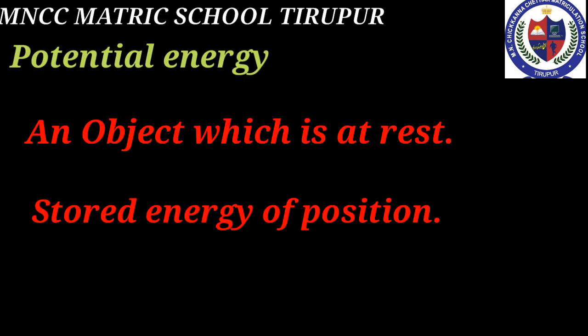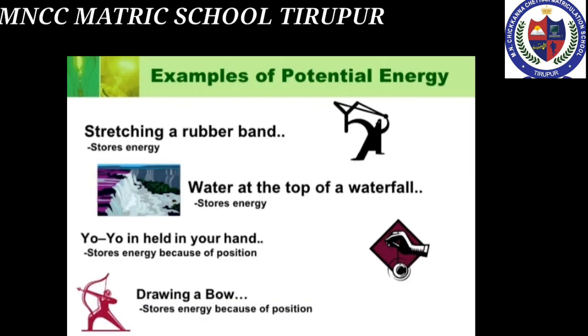The next one is potential energy. Energy possessed by an object which is at rest is known as potential energy. It is also known as stored energy of position. Examples include stretching a rubber band, water at the top of a waterfall, a yo-yo held in your hand, and drawing a bow — in all these cases, there is stored energy of position.